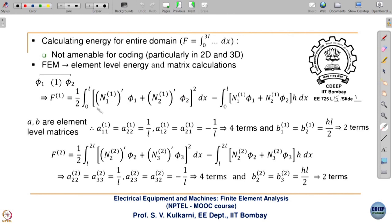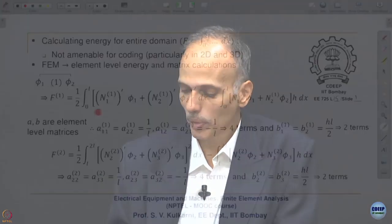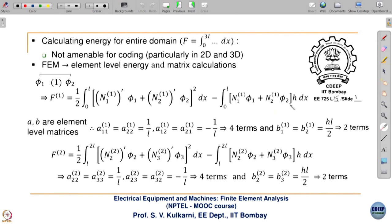So phi-dash here will have only two terms: N1-dash*phi1 plus N2-dash*phi2, where 'dash' means derivative. The derivative applies only to the shape functions since they are functions of x. Phi1 and phi2 are not functions of x because in the variational procedure we are varying the values of phi at every x.